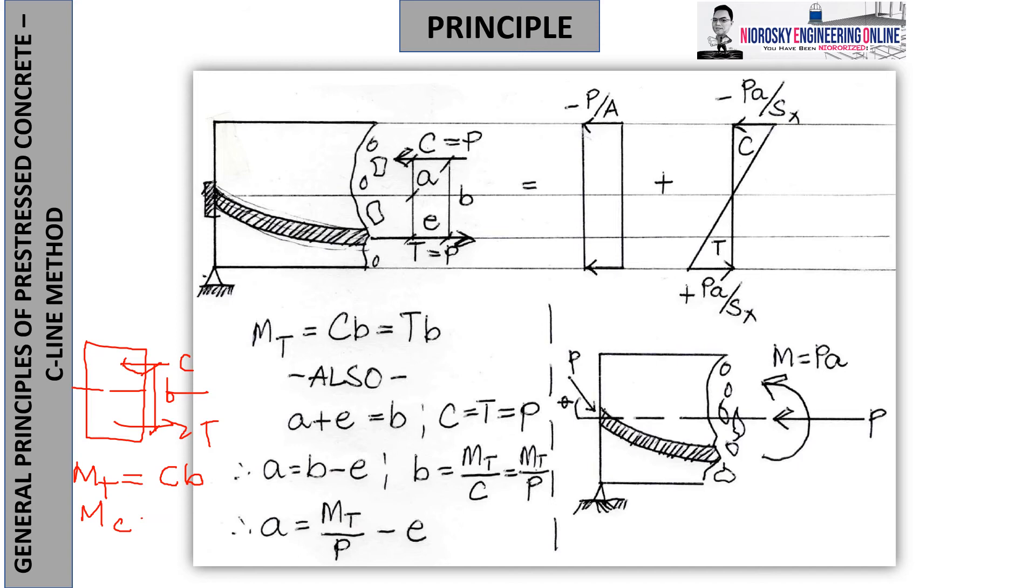The moment under tension is Cb. The moment if we take on compression is Tb. But C is equal to T is equal to P, so therefore we can say this as P. MT or MC is what you call the nominal moment.